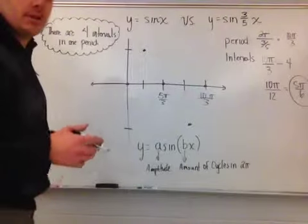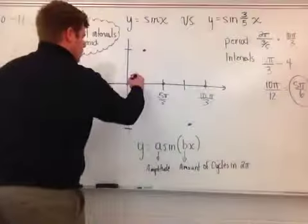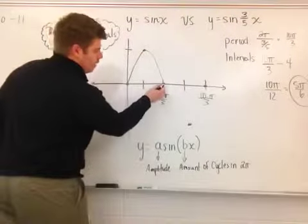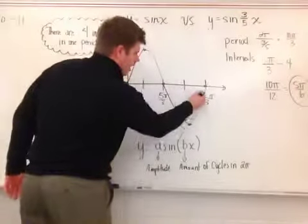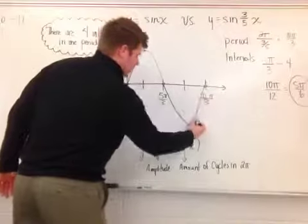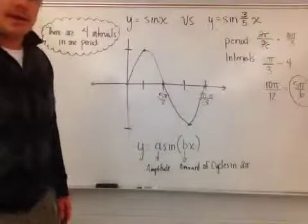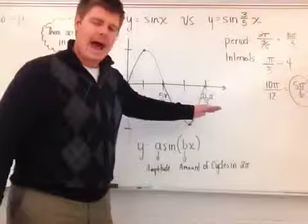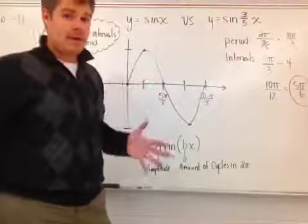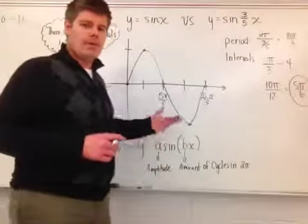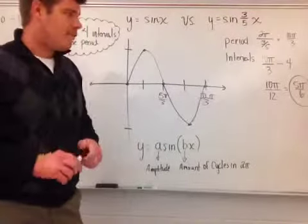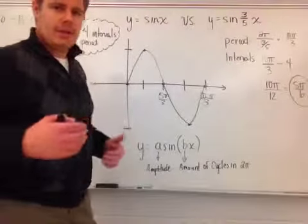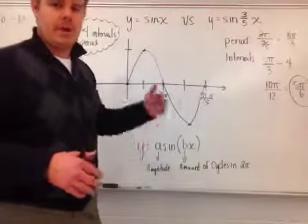All I have to do is connect the dots with a smooth curve and I have the sine function over one period. The graph of y equals sine of three-fifths x looks like this. The important thing is that the intervals must be marked on the axes — without them you can't confirm the graph is correct. I hope that helped with graphing a change of period for the sine function. Next video we'll talk about the same thing with a cosine function.